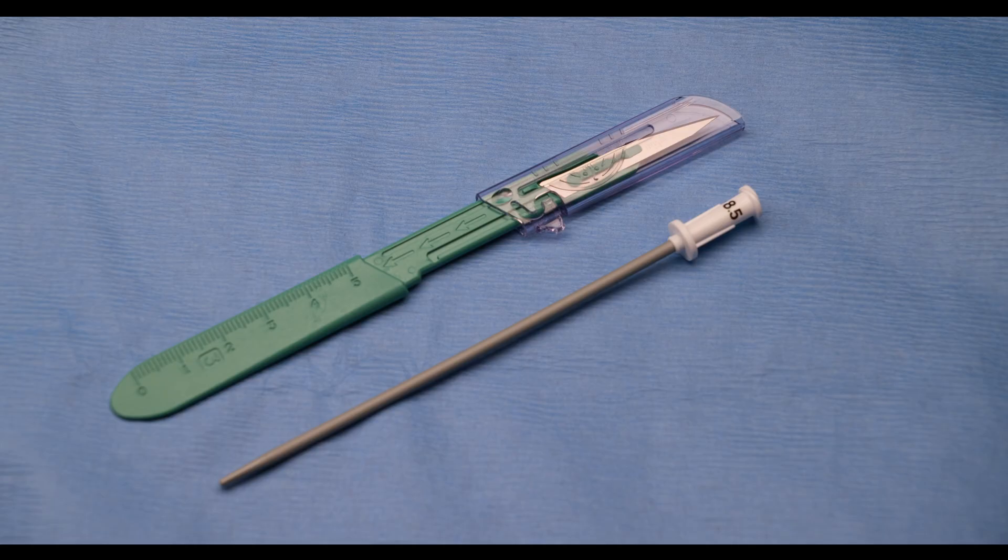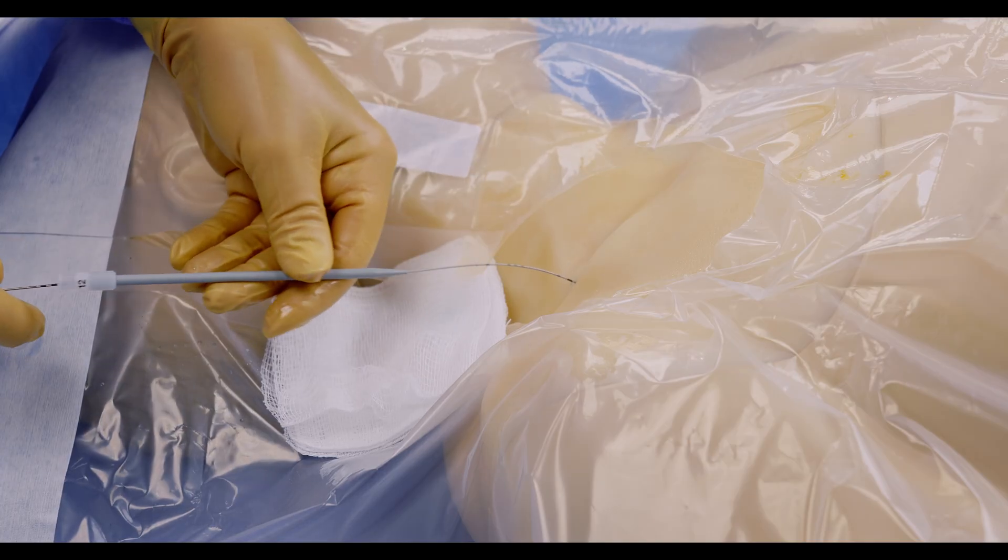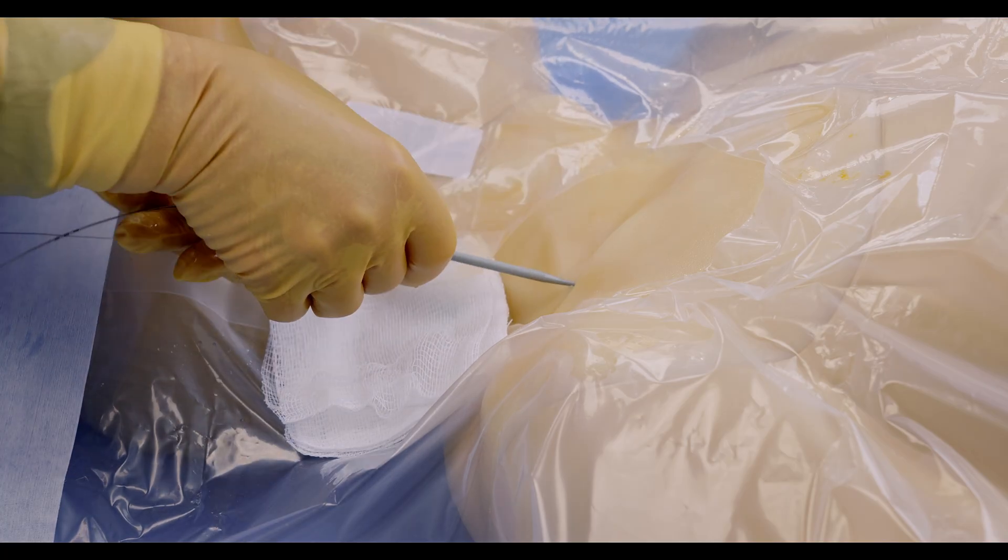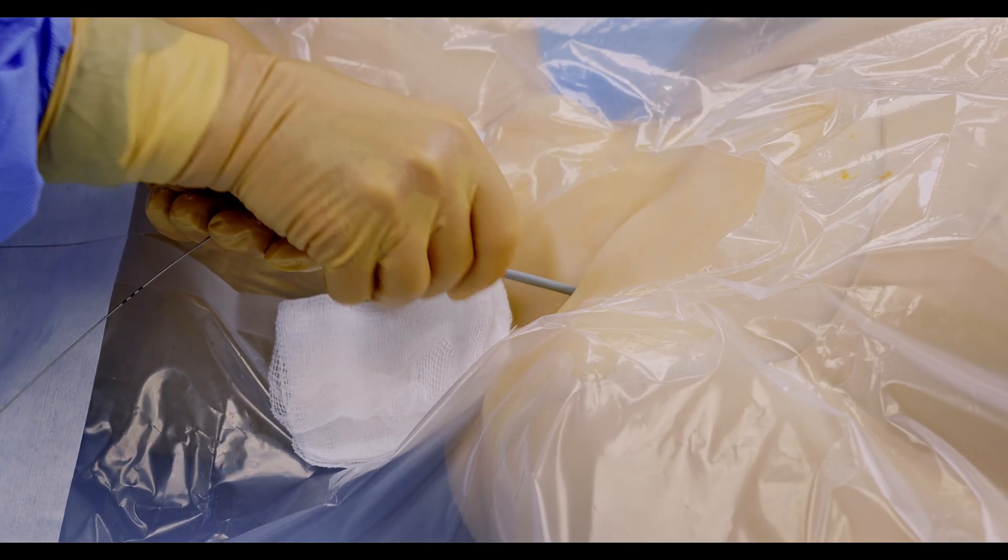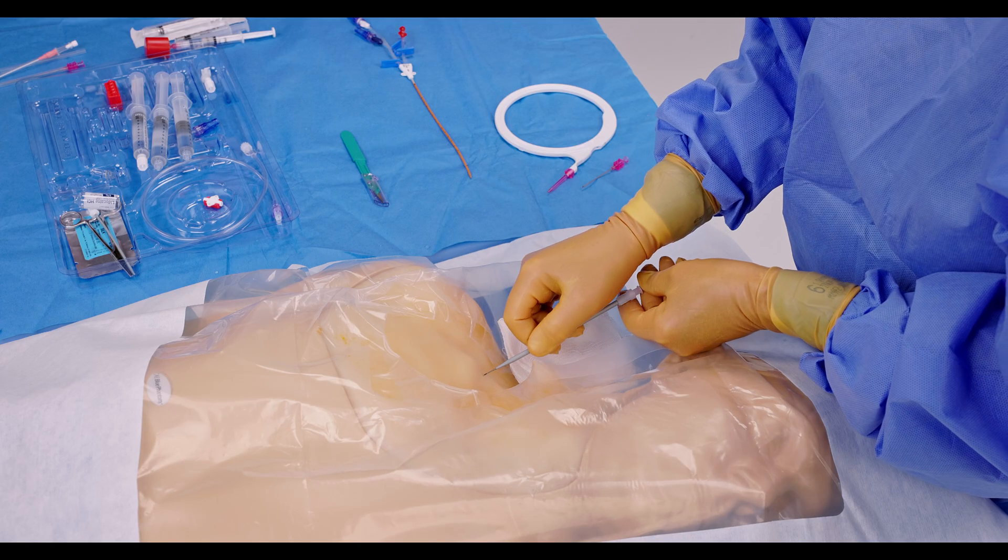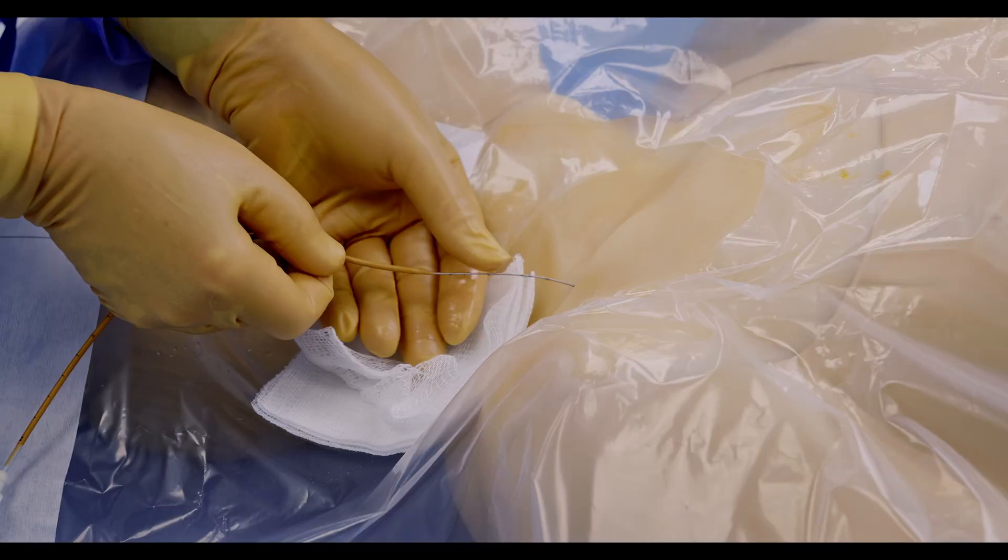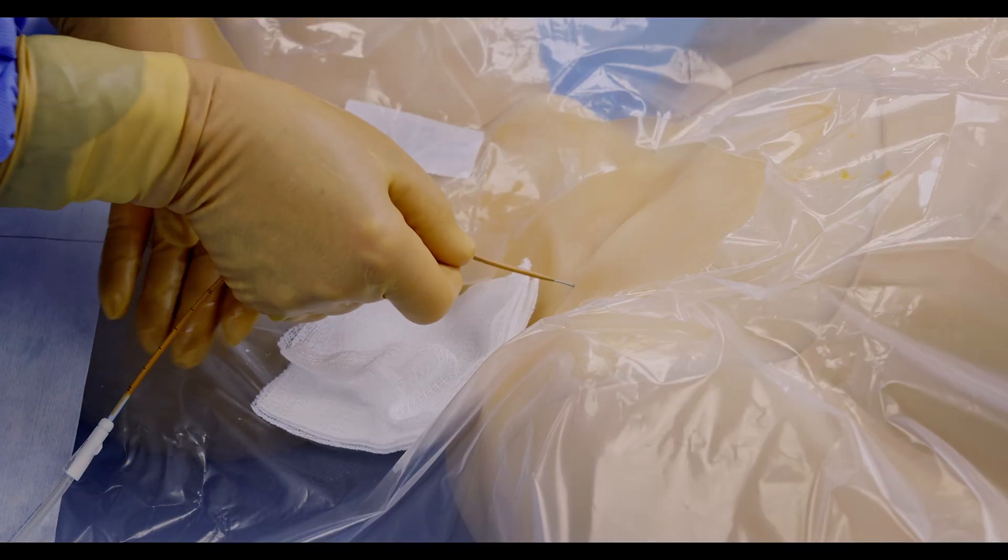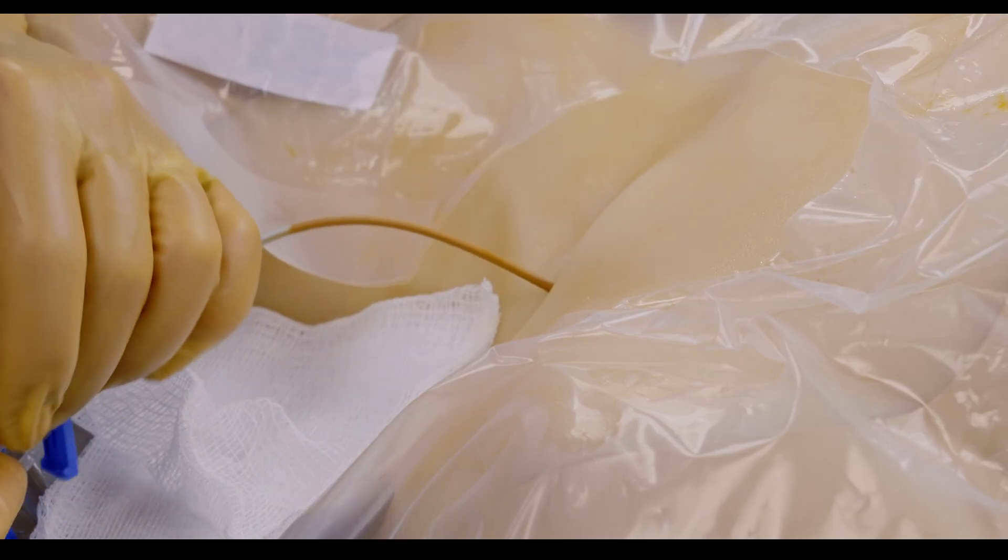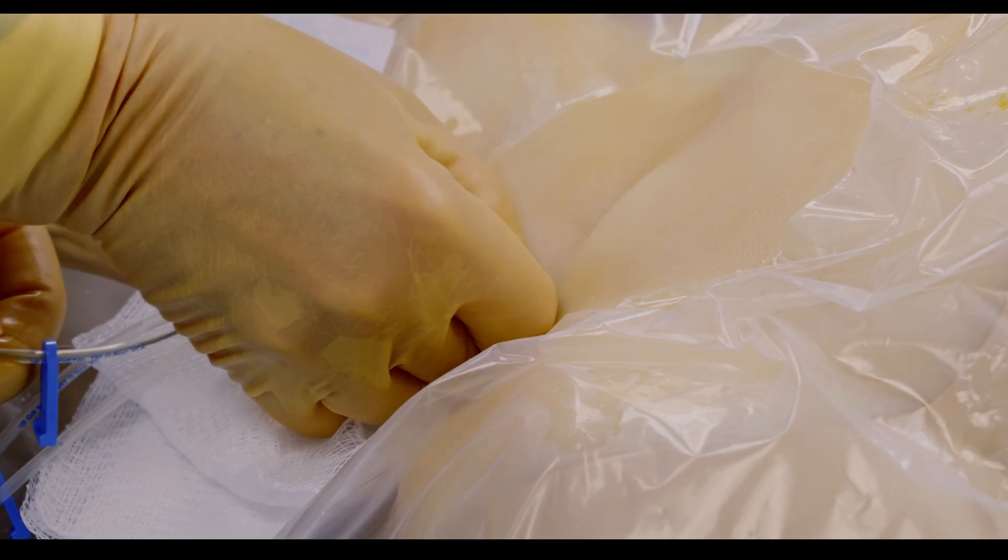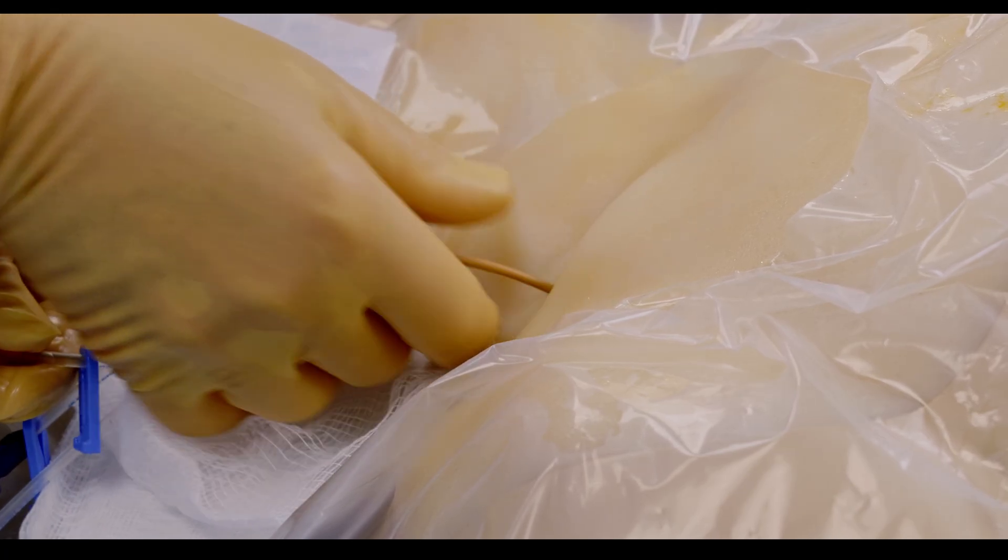Included in the kit are a dilator and an 11 blade safety scalpel. If needed, use the 11 blade safety scalpel to enlarge the insertion site. If tissue dilation is required, advance the dilator over the wire. To avoid vascular injury, never apply excessive force. Remove the dilator prior to catheter advancement. With the wire guide in place, advance the catheter over the wire guide using a gentle, controlled, twisting motion. Ensure the catheter does not extend beyond the distal tip of the wire guide.